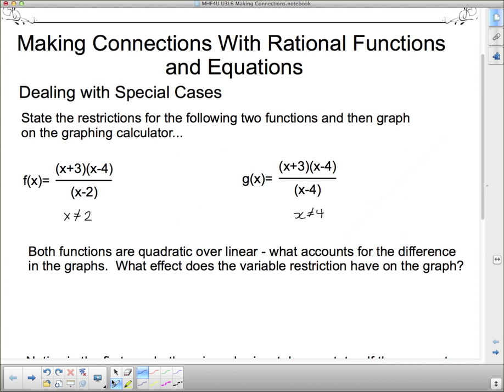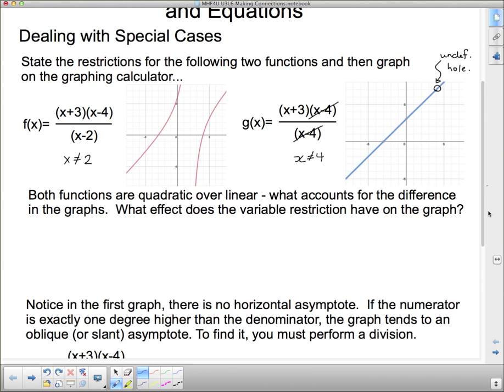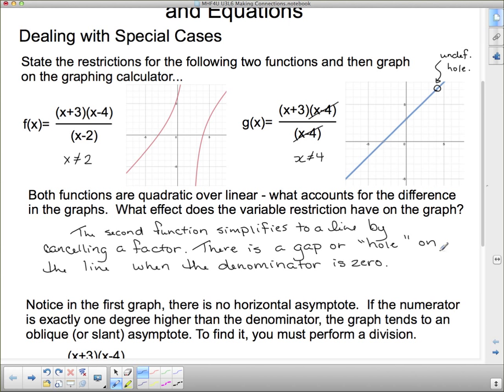So we're talking about slant asymptotes and holes in functions. Let's have a look, and you might want to do just a little rough sketch of what you saw there. You saw this thing that had no horizontal asymptote, and you saw this thing that canceled down so that it was a line, but it was a line that at 4, right there, it was undefined. There was a hole there. So both functions are quadratic over linear. What accounts for the difference in the graph? What effect does the variable restriction have on the graph? The second function simplifies to a line by canceling a factor. There is a gap or hole on the line when the denominator is zero.